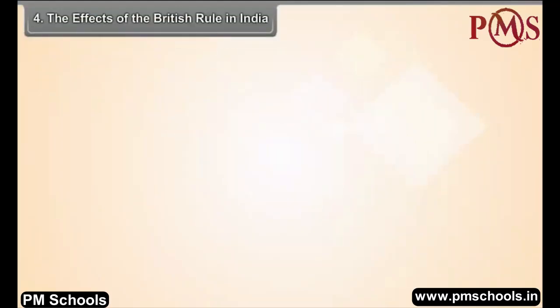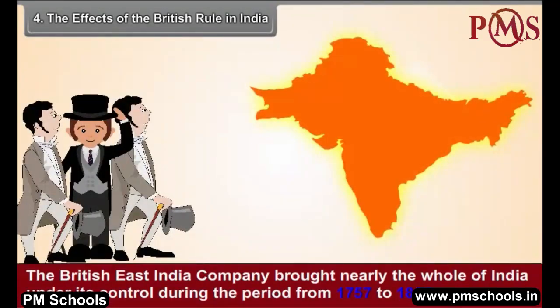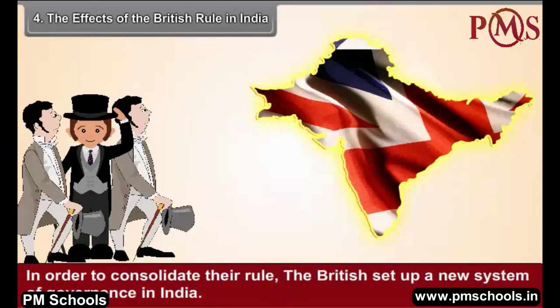Chapter 4: The Effects of the British Rule in India. The British East India Company brought nearly the whole of India under its control during the period from 1757 to 1856. In order to consolidate their rule, the British set up a new system of governance in India.